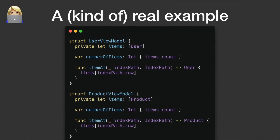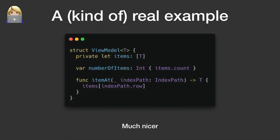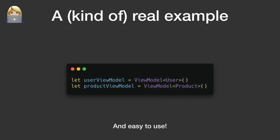That was a contrived example, so let's look at something more real. If you're doing MVVM in your app, you might have a view model that's very simple — it has a list of items, you can get the number of items in that list, or get a specific item based on an index path. I've written this at least 20 times. Using generics, you can make this less duplicated. It's a view model generic over T, with a list of items of type T, and you can still get the count or an item by index path. It's also easy to use — you say T is now a User or T is now a Product.